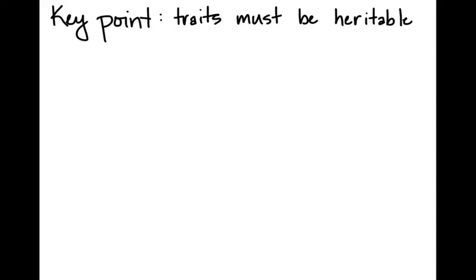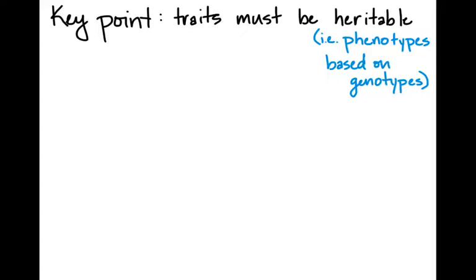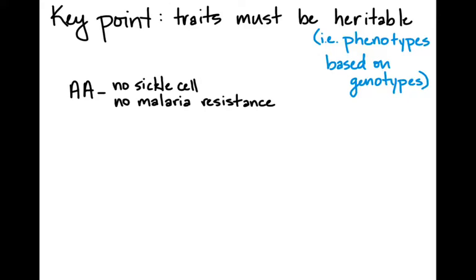A common misconception about adaptations is that you can accumulate characteristics during your lifetime and pass them on to offspring. When talking about evolution, we're talking about variation that must be heritable — phenotypes based on genotypes, where those genes can be passed on. Becoming stronger through hard work is not something you can pass on, but having resistance to malaria because of a heterozygous sickle cell trait is. That's an example of an adaptation, and it's not necessarily adaptive everywhere.